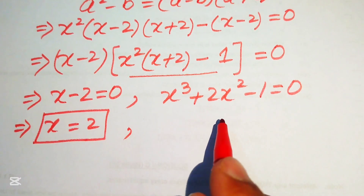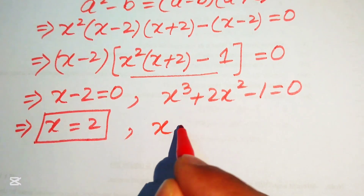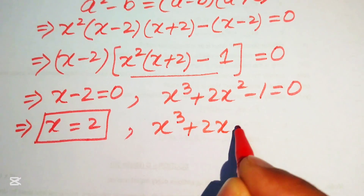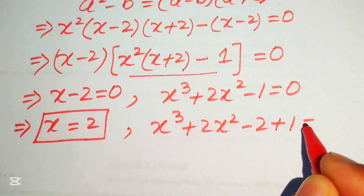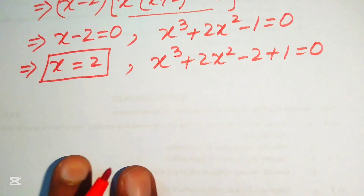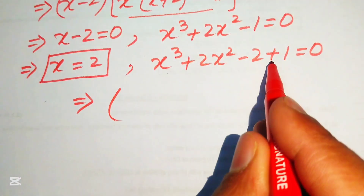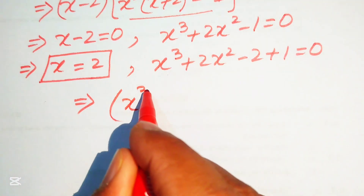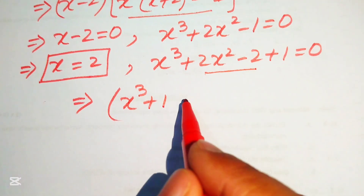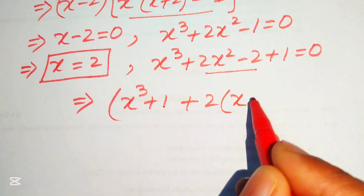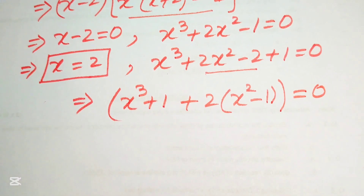To solve the cubic x³ + 2x² - 1 = 0, we rewrite -1 as -2 + 1, giving x³ + 2x² - 2 + 1 = 0. Rearranging terms: (x³ + 1) + 2(x² - 1) = 0.